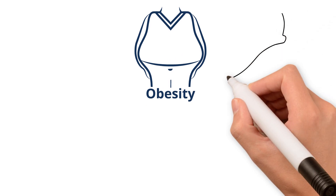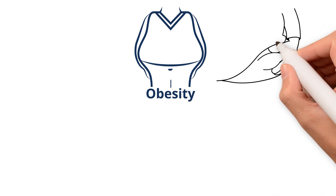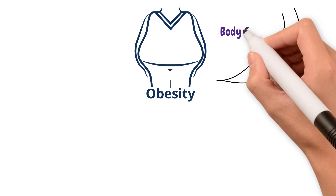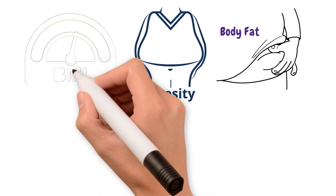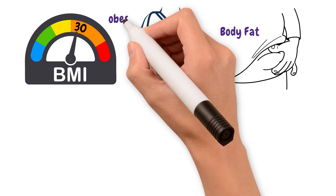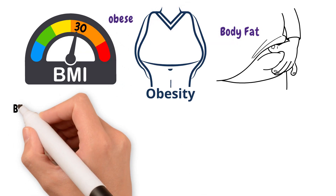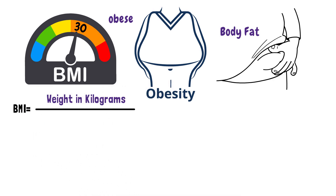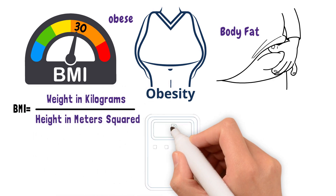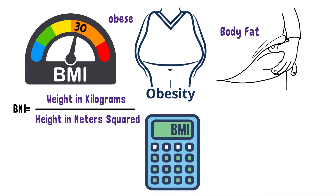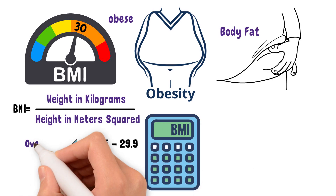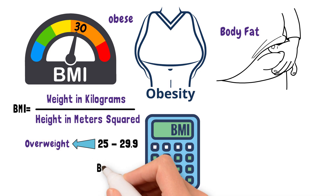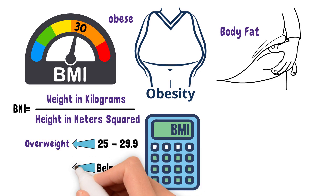Obesity is a complex disease that is influenced by many factors. It occurs when you have too much body fat. For adults, having a body mass index or BMI of 30 or higher is considered obese. To calculate your BMI, divide your weight in kilograms by your height in meters squared. You can also use the BMI calculator available on certain websites. Those with a BMI of 25 to 29.9 are considered overweight, and those with a BMI below 18.5 are considered underweight.